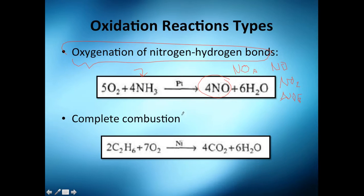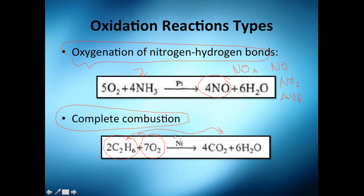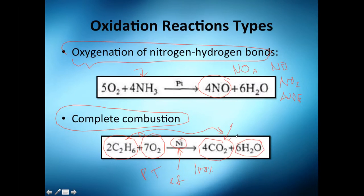Or complete combustion — you probably know it by heart, it's the most typical case. Essentially you have fuel, you have oxygen, and you burn them. You don't actually need a catalyst, but you might use one for efficiency, maybe to avoid high pressure and temperatures, or to increase the conversion. You will get, of course, the typical carbon dioxide and water.